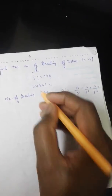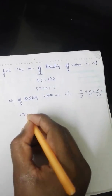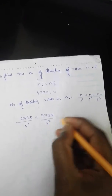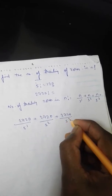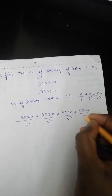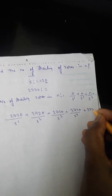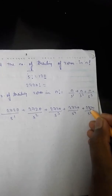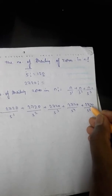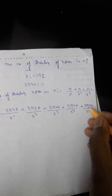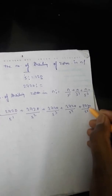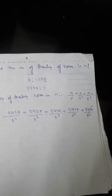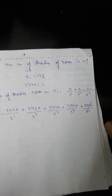Let us apply this to 2720 factorial. We compute 2720 divided by 5¹, plus 2720 divided by 5², plus 2720 divided by 5³, plus 2720 divided by 5⁴, plus 2720 divided by 5⁵. Now 5⁵ equals 3125, which is greater than 2720, so dividing gives a quotient less than 1. We discard this term and stop the series here.